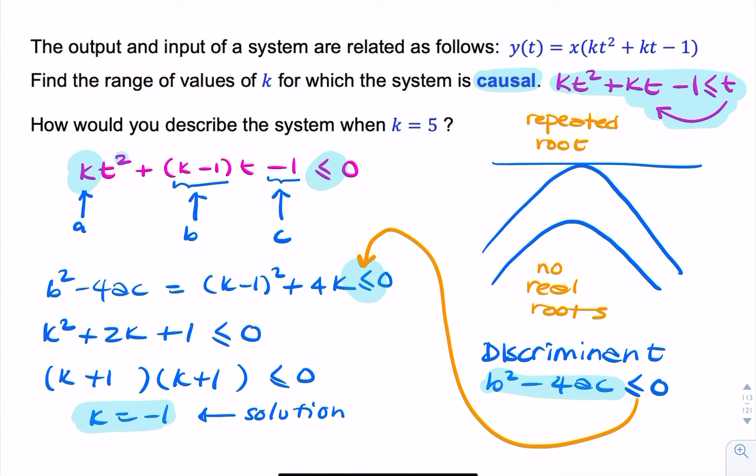The question then goes on to say, how will you describe the system when k is 5? Well, k is 5 is not the same as k is minus 1.